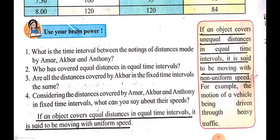Amar and Anthony have uniform linear motion because they cover equal distance in equal time intervals, while the speed of Akbar is non-uniform. That means they do not cover equal distance in equal time interval.